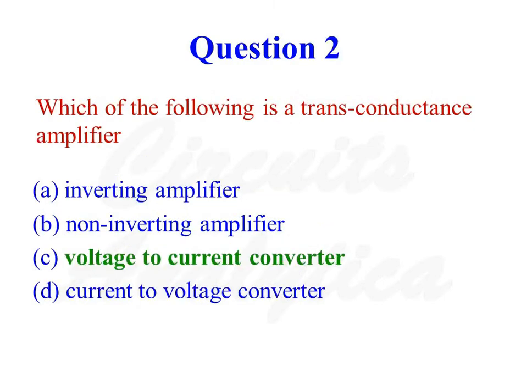Which of the following is a transconductance amplifier? A voltage-to-current converter is called a transconductance amplifier. So the correct answer is option number 3.